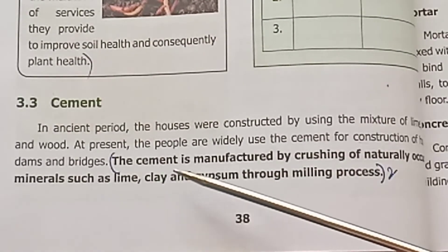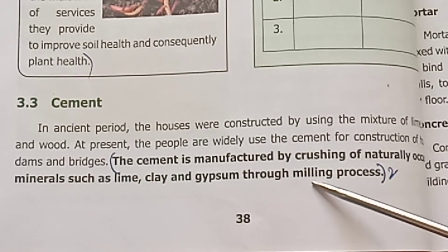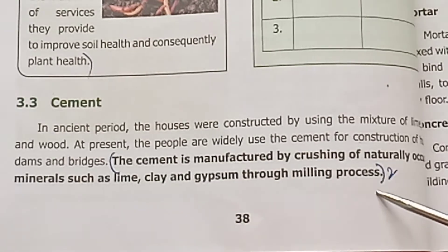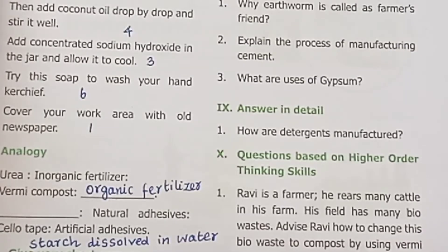2. Explain the process of manufacturing cement. The cement is produced by the milling process.